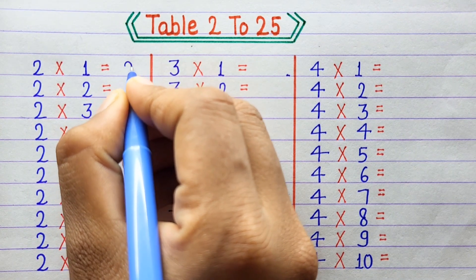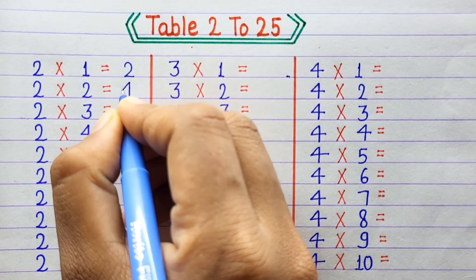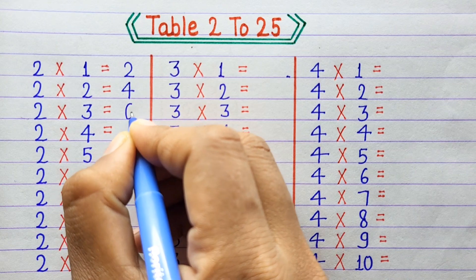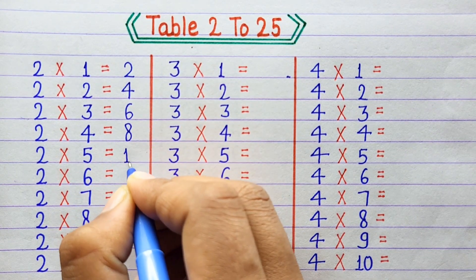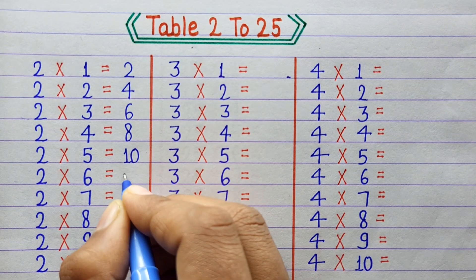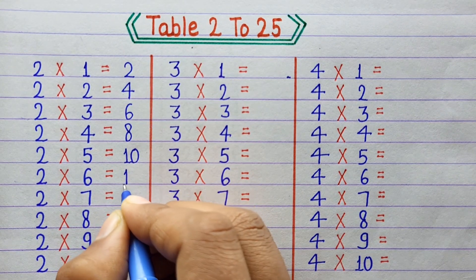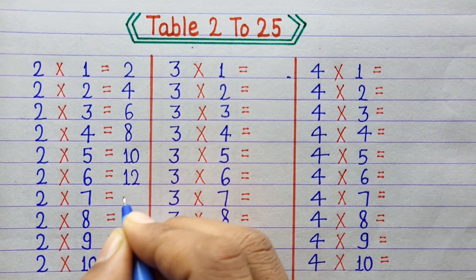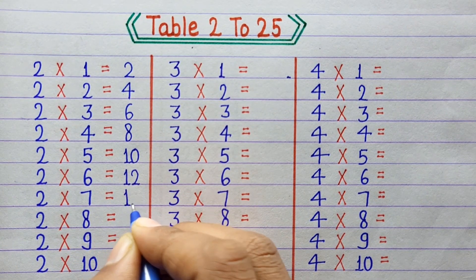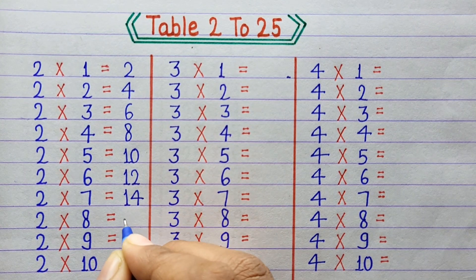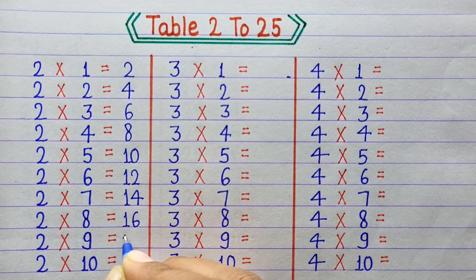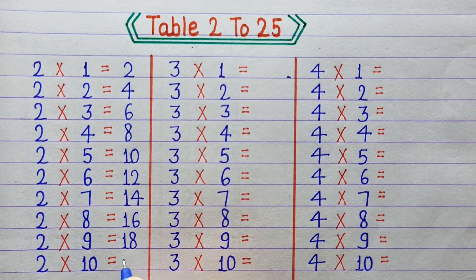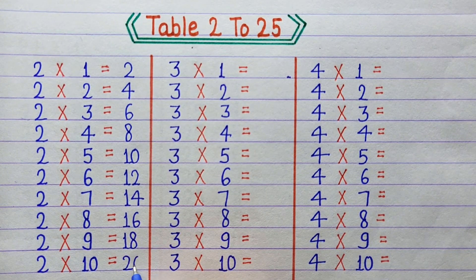2×1=2, 2×2=4, 2×3=6, 2×4=8, 2×5=10, 2×6=12, 2×7=14, 2×8=16, 2×9=18, 2×10=20.